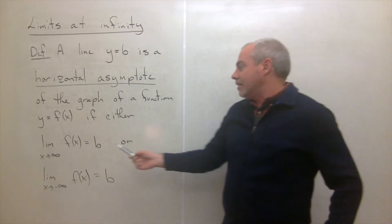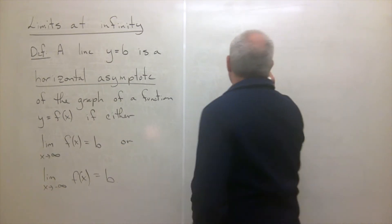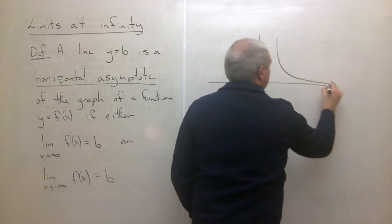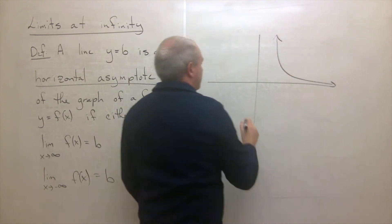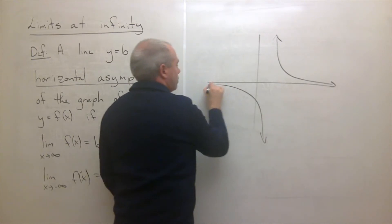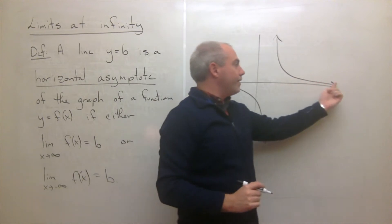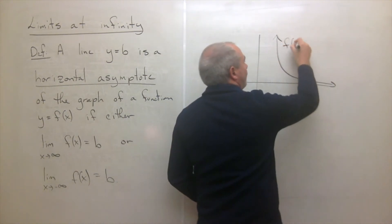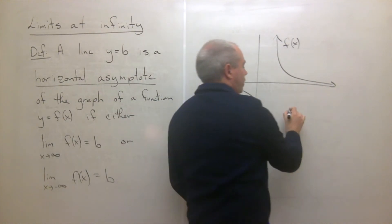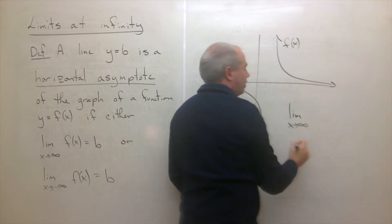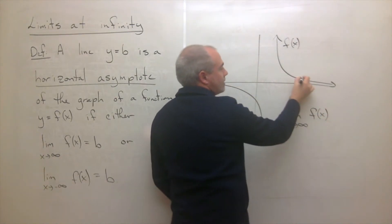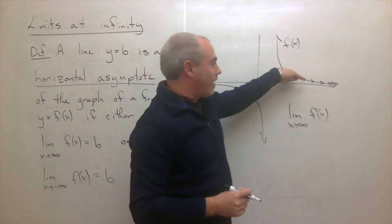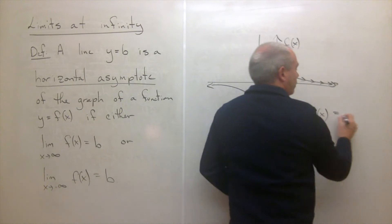What do I mean by the limit as x goes to infinity? What I mean is that as this function moves out towards infinity — let me just draw a function here — maybe it looks something like this. So as x gets bigger and bigger, is this function getting close to a y value? If I ask the question, what's the limit as x goes to infinity of f of x, I'm asking: as x gets bigger and bigger, are the y values getting closer and closer to something? In this case, you can see the y values are getting very, very small, so this limit would be zero.